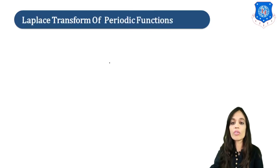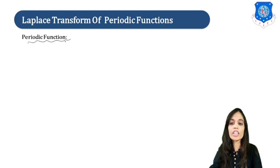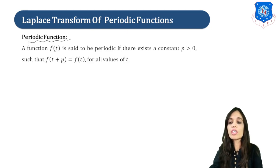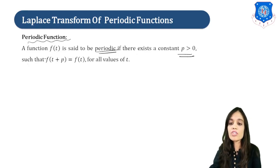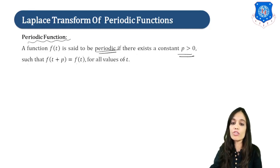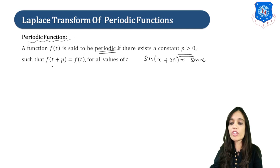Now let us go to our next topic: Laplace Transform of a Periodic Function. First, let us discuss what a periodic function is. A function f(t) is said to be periodic if there exists a constant p greater than 0 such that f(t + p) equals f(t) for all values of t. For example, sin(x + 2π) equals sin(x), so sine is a 2π-periodic function.